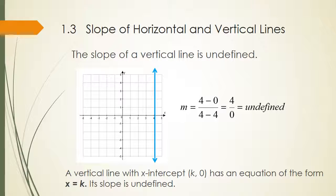A vertical line has an undefined slope. When you use the slope formula with two points on a vertical line, the denominator is zero, which is undefined. A vertical line with x-intercept (k, 0) has an equation of the form x equals k. For example, the line graphed here is x equals 4.